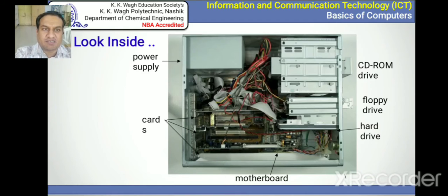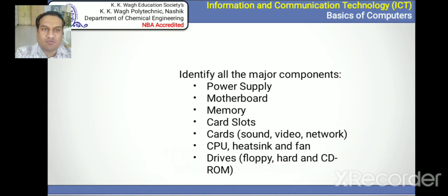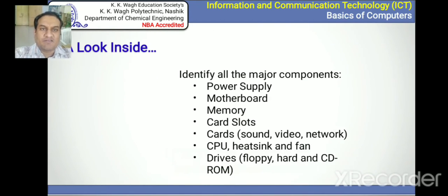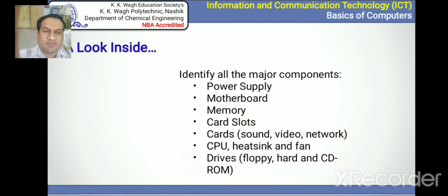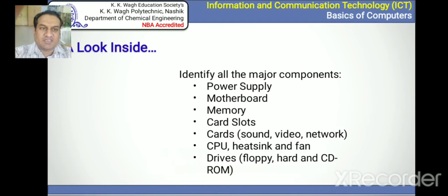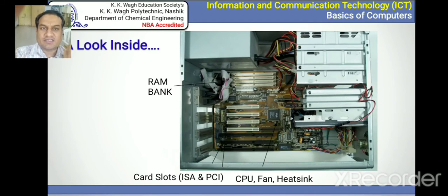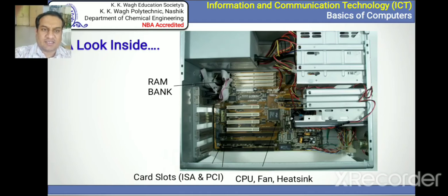The major components include power supply, motherboard, memory, card slots, cards, CPU, heat sink and fan, drivers, etc. In this slide we can observe the RAM bank — that is Random Access Memory — then card slots (ISA and PCI), and CPU fan heat sink elements.